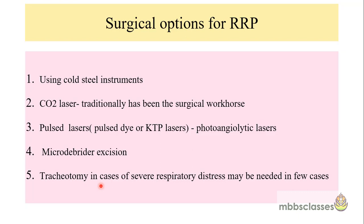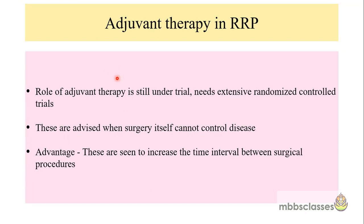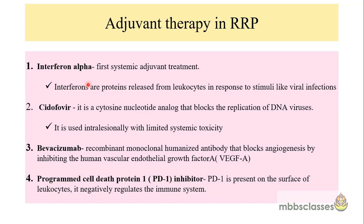Tracheotomy may sometimes be needed when the child has severe respiratory distress. Another modality is adjuvant therapy, though its role is still under trial and requires extensive randomized controlled trials. Adjuvant therapies are advised when surgery alone cannot control the disease — when the child requires multiple surgical procedures and the disease keeps recurring in too bulky an amount. Studies show that adjuvant therapy increases the time interval between surgical procedures.